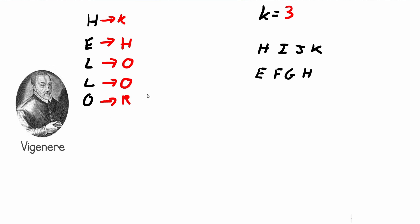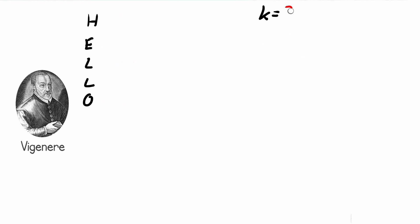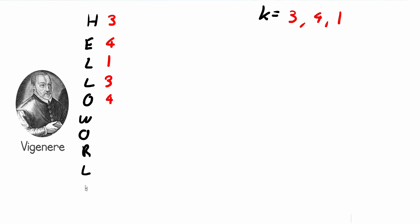Now in the Vigenere cipher, instead of having one key — just having three — we have a list of keys. For example, we might have the list [3, 4, 1] and we apply this key to each letter of our input string. So we apply 3 to the first letter, then 4, then 1, and then we start repeating. We apply the sequence 3, 4, 1 continuously across the full input string.